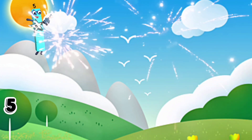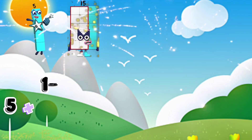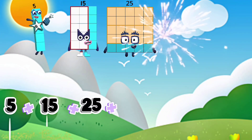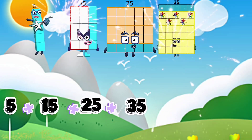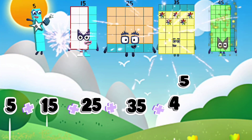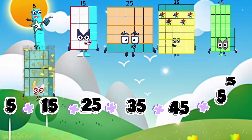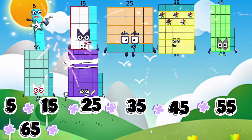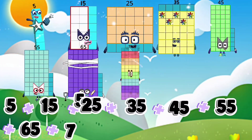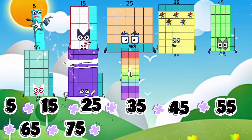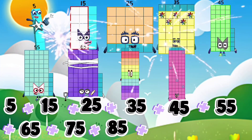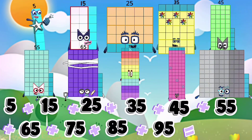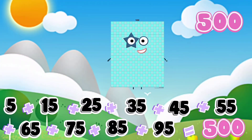5 plus 15 plus 25 plus 35 plus 45 plus 55 plus 65 plus 75 plus 85 plus 95 is equals to 500.